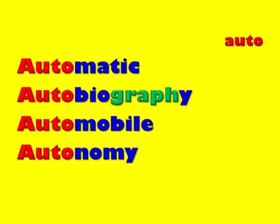An autobiography actually contains three different roots: auto, bio, and graph. We determined that biography means to write about one's life, so autobiography means to write about one's own life — to write about yourself's life. An automobile also means self-moving. Cars, when they first came out, were self-moving machines — they didn't need a horse to pull them, or a carriage, or someone to push them. They moved by themselves, and thus were called automobiles.